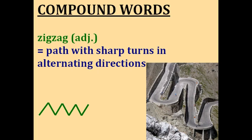Zigzag. This is a fun word to say. Something that is zigzag follows a path with sharp turns in alternating directions — you can see that green line that goes back and forth. The picture shows a zigzag road. So you've just learned some compound words from A to Z.